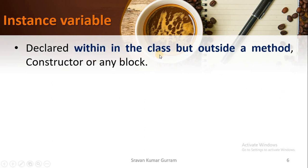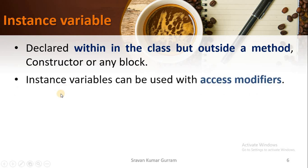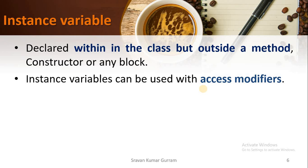Instance variables are declared within the class but outside of a method, constructor, or any block. Local variables are declared within the method, but instance variables are declared within the class but outside the method. Instance variables can be used with access modifiers, but local variables cannot. If you haven't watched the last video, the link is given in the description — you will get a clear idea about the differences between local variables and instance variables.